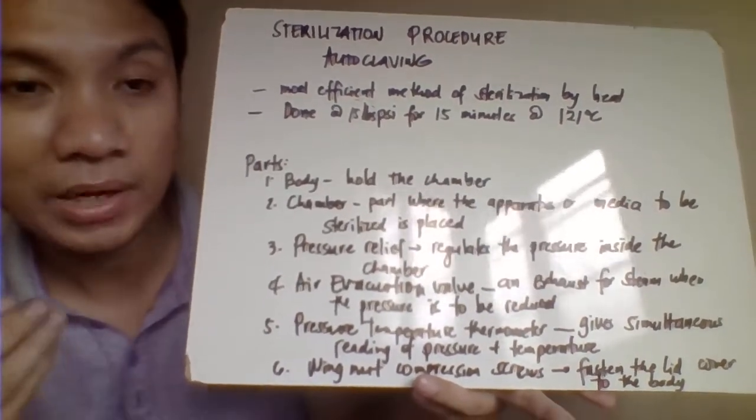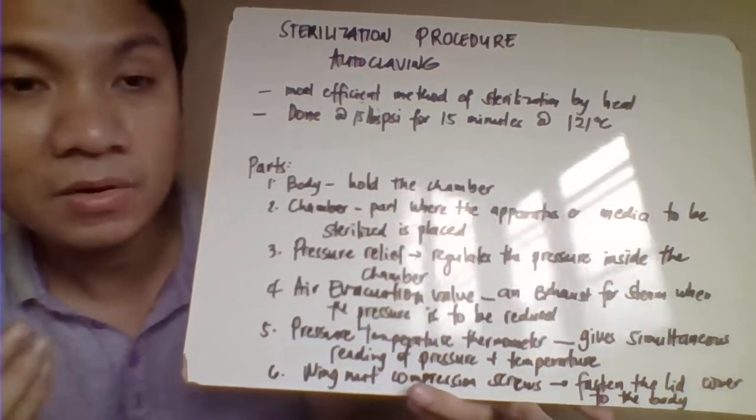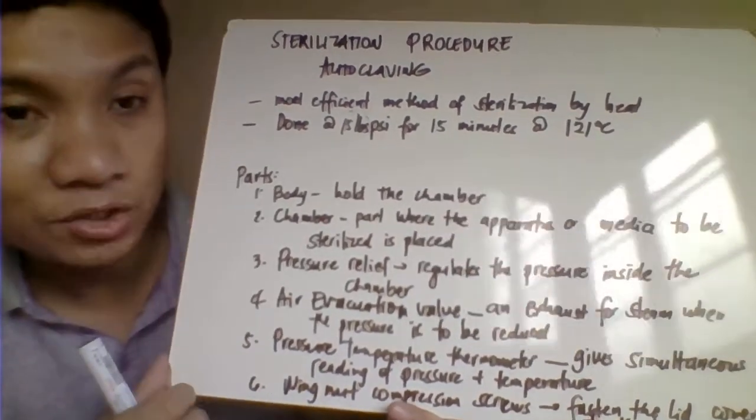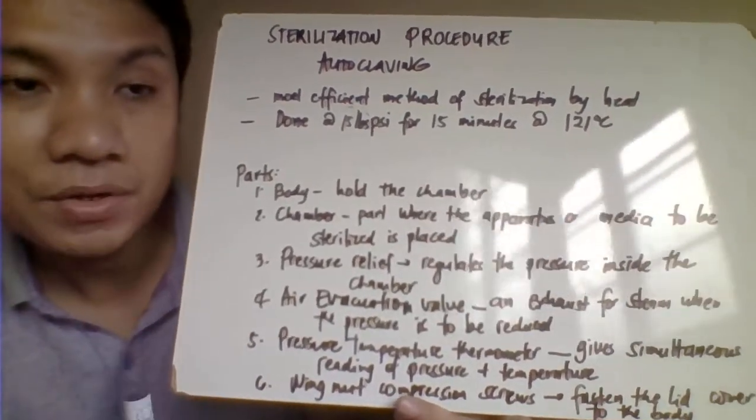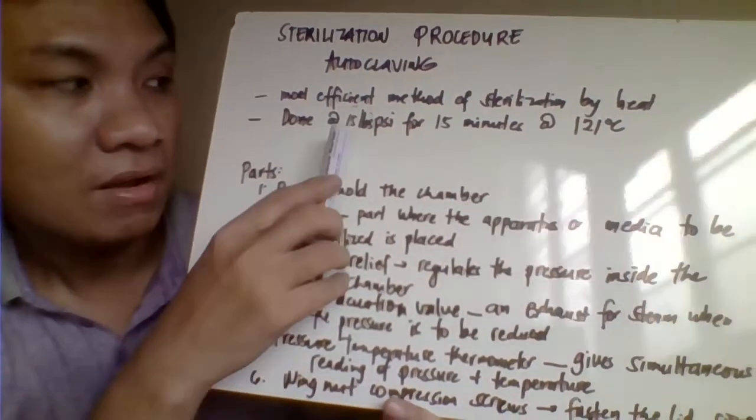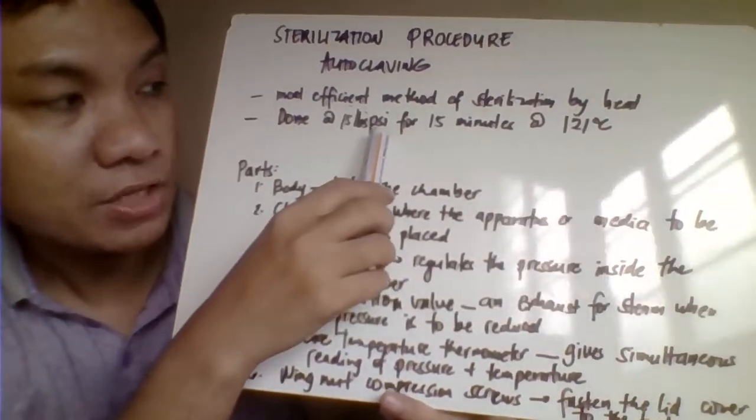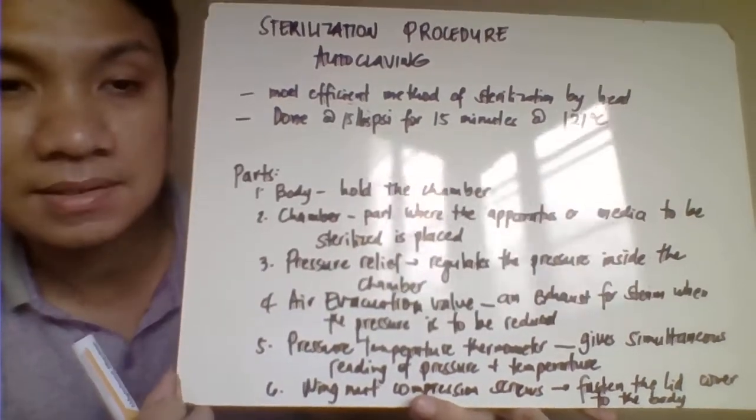The steam here is responsible for the sterilization. We set the temperature and pressure at 15 pounds per square inch for 15 minutes at 121 degrees Celsius.